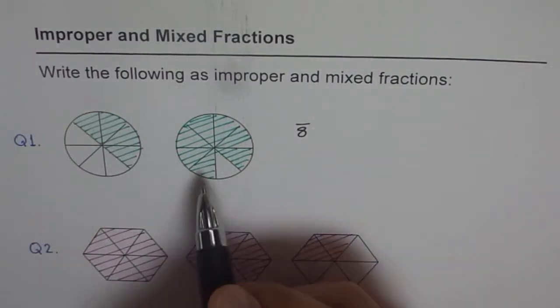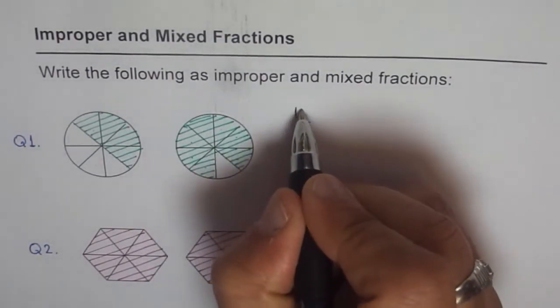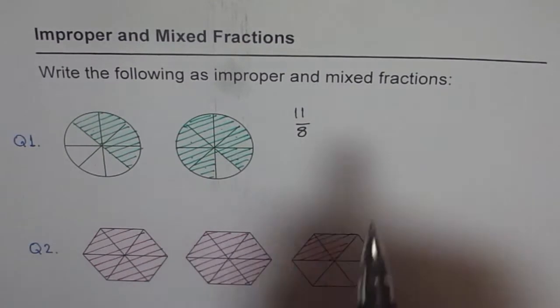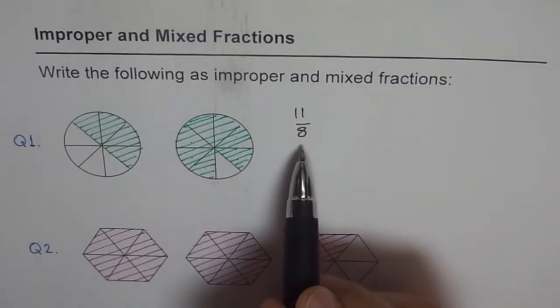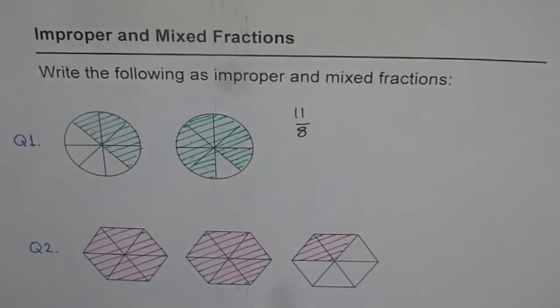So how many 8ths do you have? 1, 2, 3, 4, 5, 6, 7, 8, 9, 10, 11. So we have 11 8ths. Since numerator is greater than denominator, it is called improper fraction.